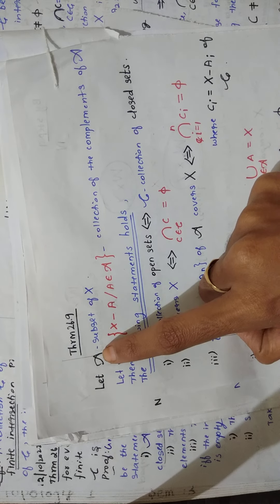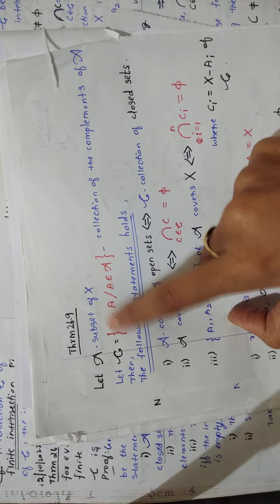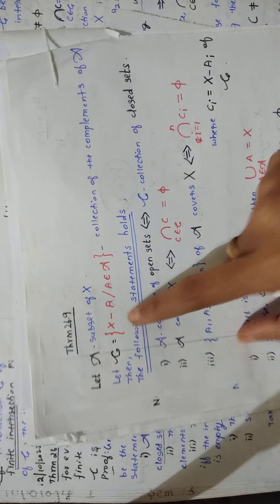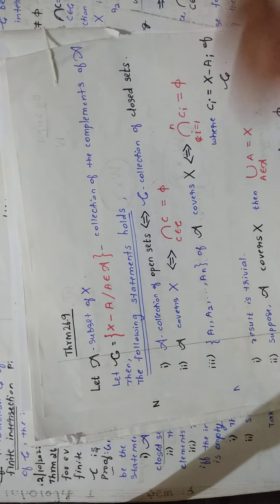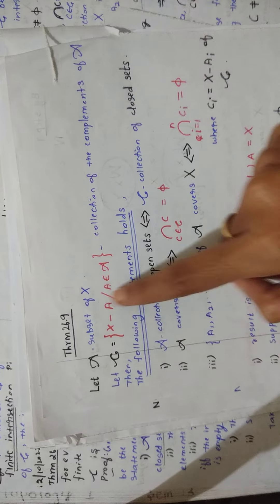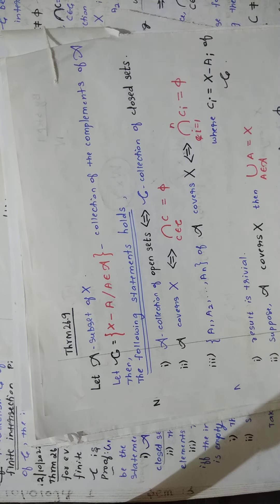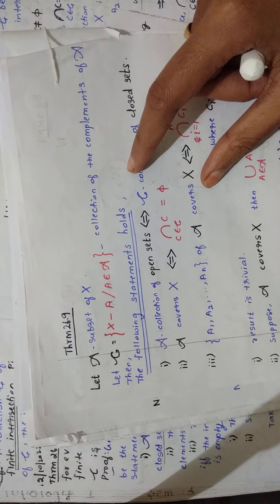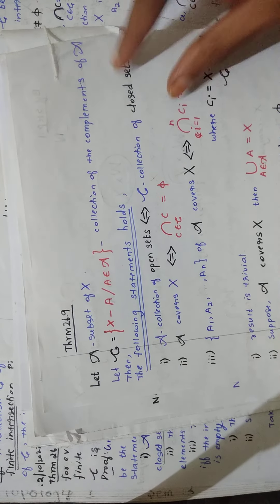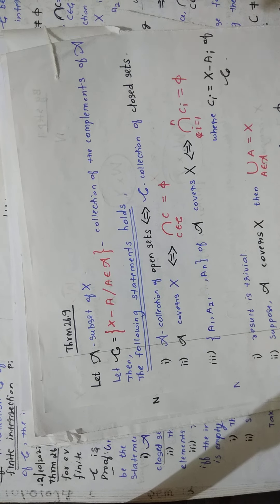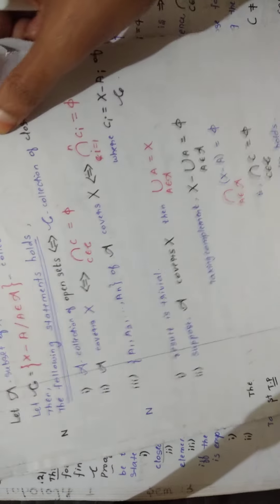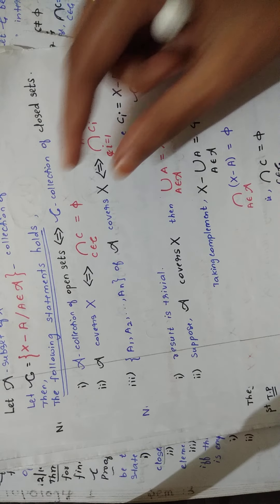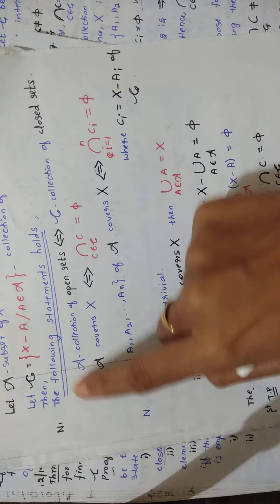Script C is the collection of complements of script A, where X minus A is the complement of each element A in script A. Then the following three statements hold, which we will first prove, and then use to prove the main theorem.